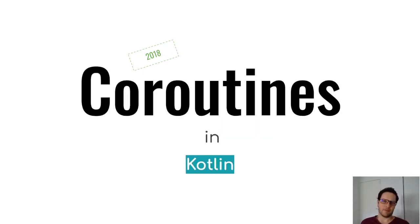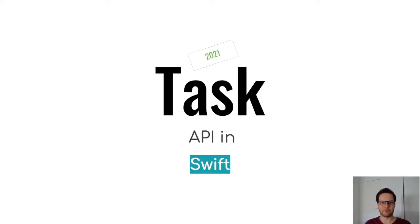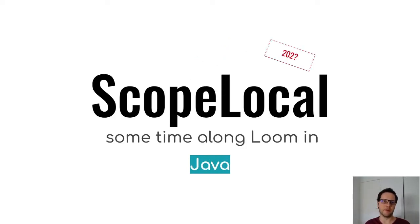The same year, Kotlin announced that they would adopt the concept for their coroutines, providing a scope for coroutines as a form of structured concurrency. Then it was adopted in Swift as well, in late 2021, in the new task API for async programming. The Java team has also been exploring structured concurrency along with Loom, though it's unclear when Loom will land and whether it will have structured concurrency.